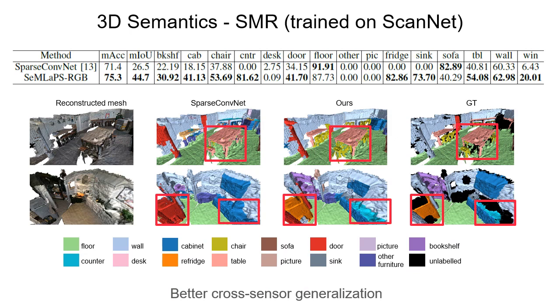In this slide, we show the cross-sensor generalization results on our self-collected SMR dataset. From the table, our system in RGB mode shows the best performance in both metrics.